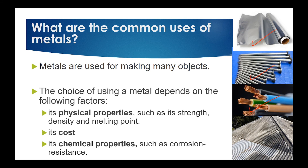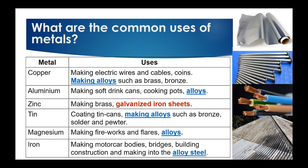The choice of metal depends on its physical properties, cost, and chemical properties. For example, aluminum foil is used partly because aluminum is resistant to corrosion, helping to keep food fresh for longer. Copper is used to make electric wires and cables, and can also be used to make alloys. Take some time to understand and remember the common uses of these metals.